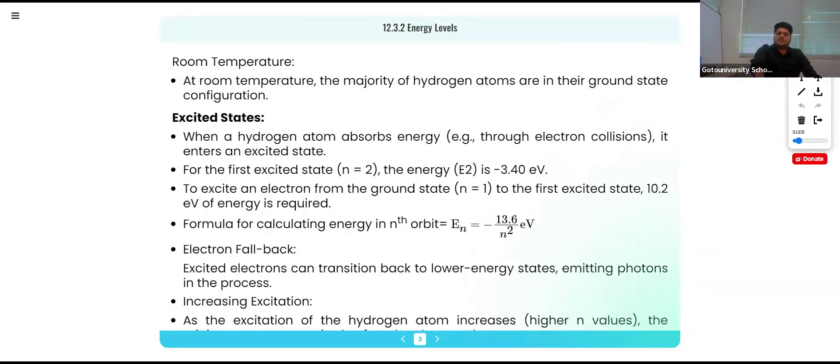At room temperature, the majority of hydrogen atoms are in their ground state configuration. When a hydrogen atom absorbs energy, it enters an excited state. For the first excited state, the energy is minus 3.4 eV. For another excited state, the energy is minus 10.2 eV. How to calculate the excited energy? We have the formula En equals minus 13.6 upon n square in terms of eV. Excited electrons can transit back to lower energy states, emitting energy in this process.